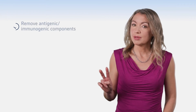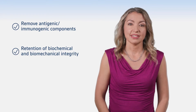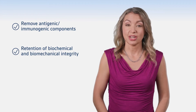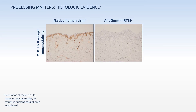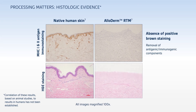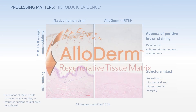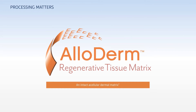Remember the two main goals of ADM processing discussed at the beginning of this video? Here's histologic evidence that shows they've been achieved in benchtop testing. In the native human skin on the left, the brown staining indicates the presence of cellular material. But we don't see any positive brown staining in the Alloderm sample on the right — proof that the LifeCell tissue process effectively removes cellular material. The lower pair of images shows that the structure of the native dermis has been maintained following the LifeCell tissue process, resulting in Alloderm: an intact acellular dermal matrix.